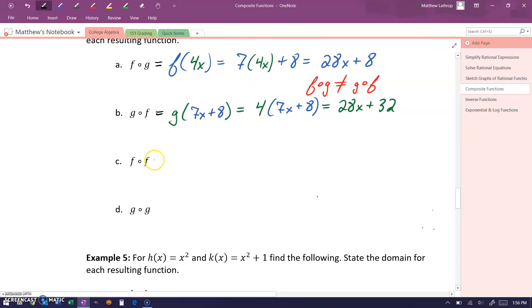We can also look at taking a function composed with itself. For instance, f of f would be our function f of x evaluated at itself, which is 7x plus eight. This means that we'll take our given function f, and everywhere we have an x, substitute in that function 7x plus eight. Distributing through here will give us 49x plus 56 plus eight, or 49x plus 64.